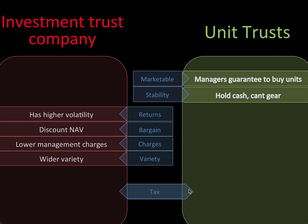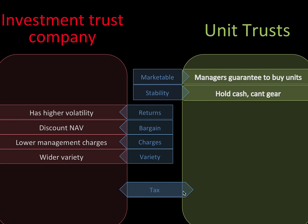A unit trust is more marketable and has more stability. However, an investment trust company can get higher returns, you can buy it at a bargain, it has lower charges, and there's a wider variety. As far as tax goes, that's very much dependent on the territory that you are living in.